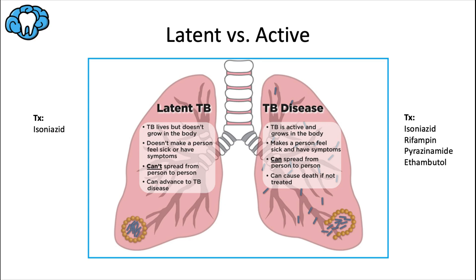Let's distinguish latent from active infections. People with a latent TB infection have tuberculosis bacteria in their lungs or bodies but are not sick because the bacteria are not active. They don't have symptoms and can't spread TB to others. However, they are at risk of developing active TB in the future, so they're often prescribed the antibiotic isoniazid to prevent that.